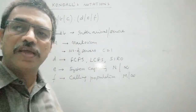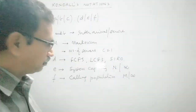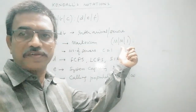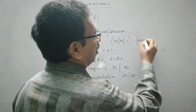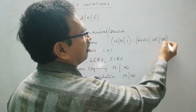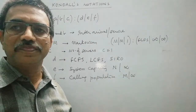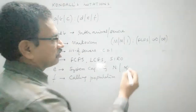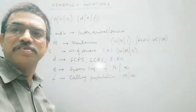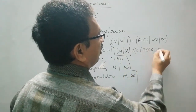So accordingly, we can designate a queuing model in this fashion. For example, if it is a single server queuing model, we will denote it as M slash M slash 1, where the inter-arrival time and service time follows exponential distribution, it is a single server, the queuing discipline is first come first serve, and there is no restriction on the capacity of the system as well as no restriction on the number of customers. So for infinite customer base and infinite service capacity, this is the single server model.